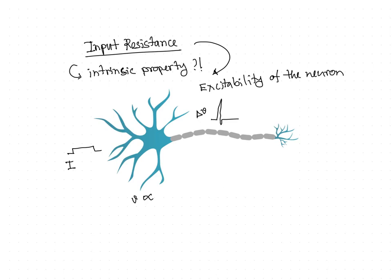You can say V equals IR, and in this case it's input resistance, so it's R_in. So input resistance is nothing but the ratio of voltage by current. So this current you are actually injecting, and the voltage deflection is basically recorded by you, and the ratio of the two is known as the input resistance.